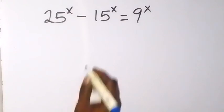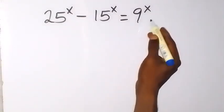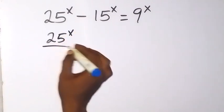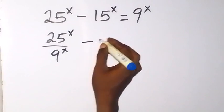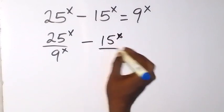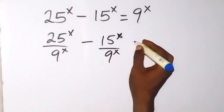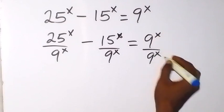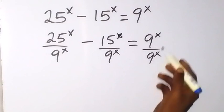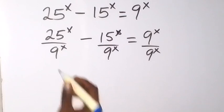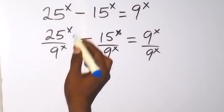From here, let's divide through by 9 raised to power x. So we can have 25 raised to power x divided by 9 raised to power x, then minus 50 raised to power x also divided by 9 raised to power x, which is equal to 9 raised to power x divided by 9 raised to power x. These cancel each other and we have 1 left on that side.